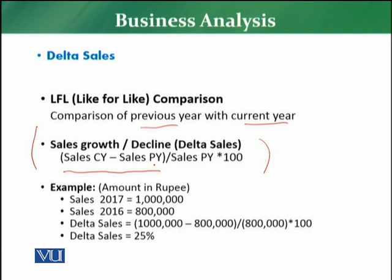The outcome will be sales growth or decline. For example, assume sales 2017 is 1 million and sales 2016 is 800 thousand. Applying the formula: sales 2017 minus sales 2016, divided by sales 2016, multiplied by 100 — delta sales equals 25%. Because delta is positive, this means 25% sales growth.